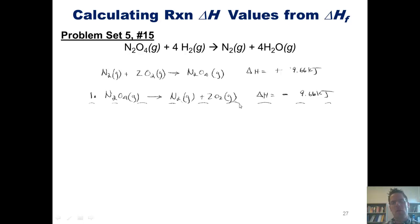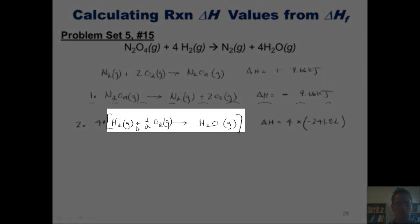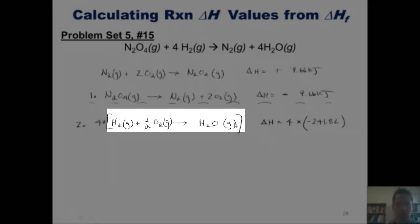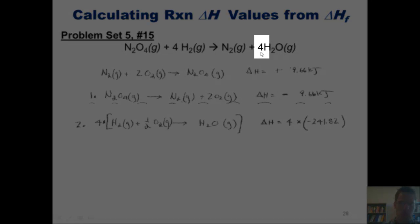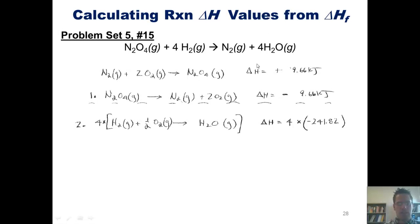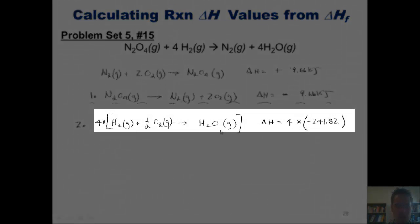Now I just have to focus on the formation of gaseous water. As I look up the formation of gaseous water, you'll note that Appendix C gives me this equation, H2 plus 1.5 O2 forming H2O gas. Because there's a coefficient 4 in front of the H2O gas on my product side, I have to multiply the entire equation by 4. The accompanying enthalpy value, negative 241.82, also has to be multiplied by 4.